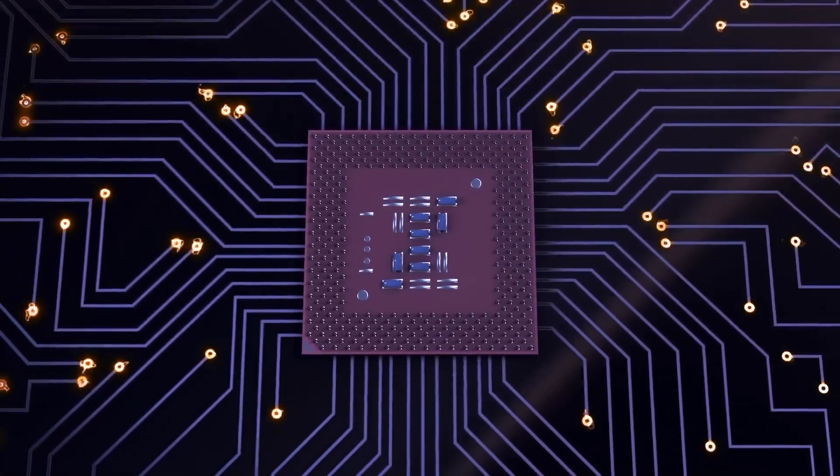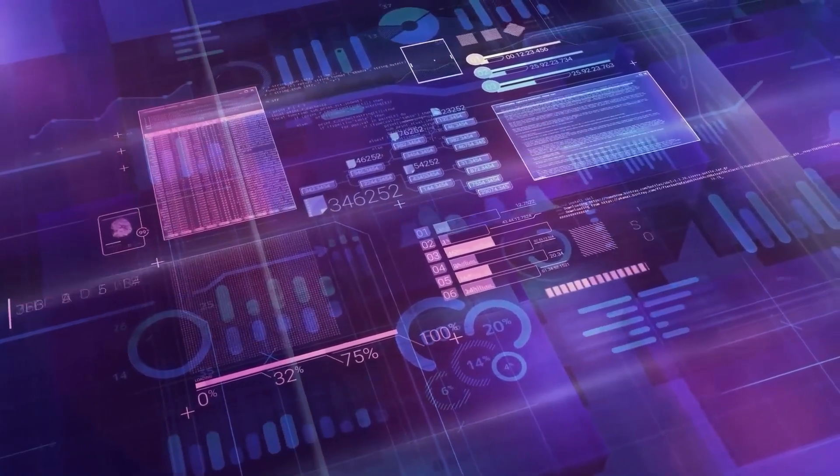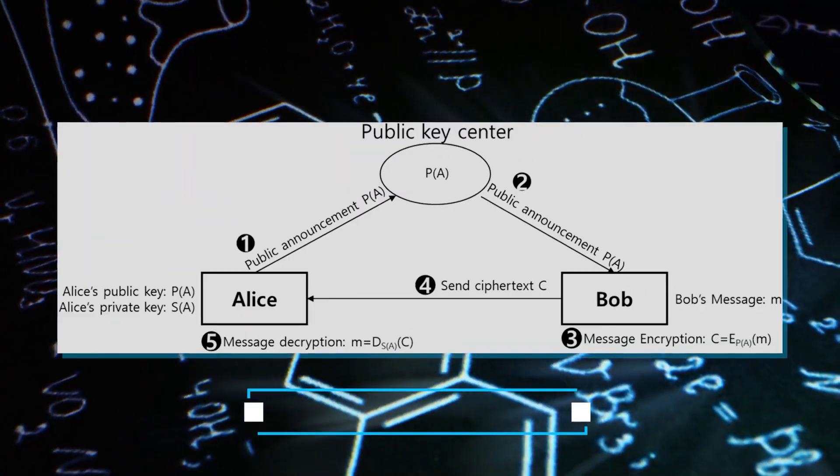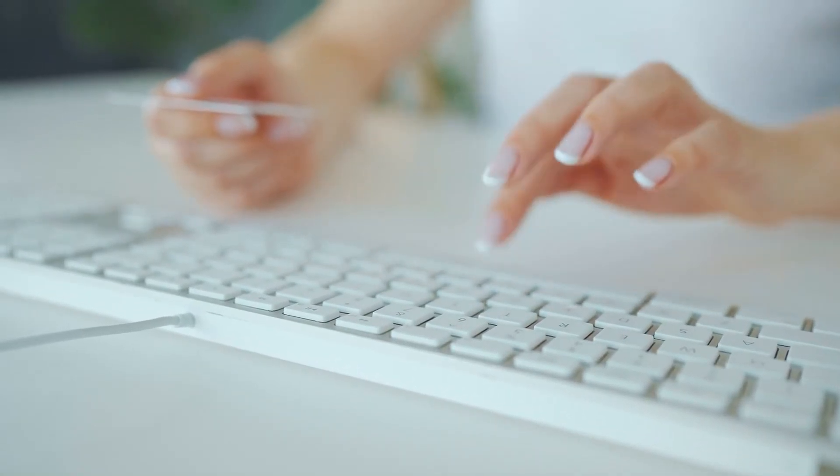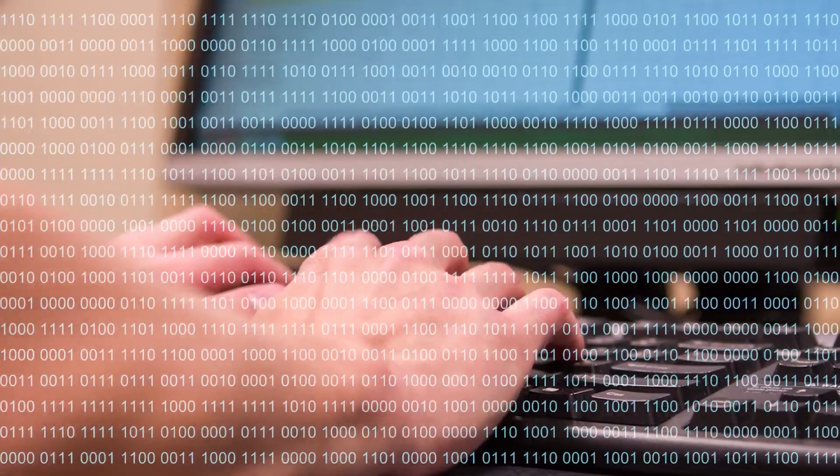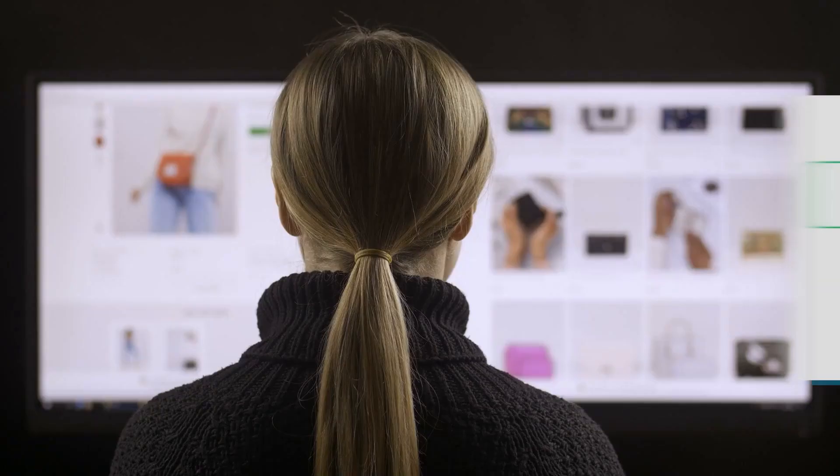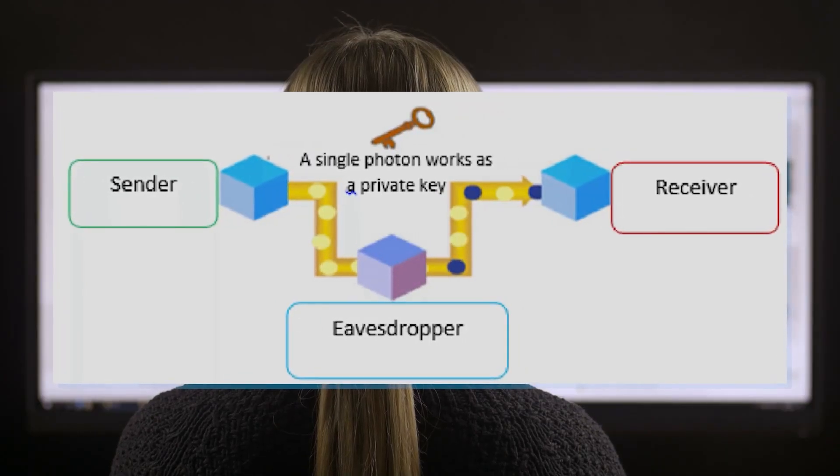This is where RSA encryption comes in. The information you send is scrambled using a highly complex math formula called the public key. The result is a mix of numbers and letters that are incomprehensible to anyone intercepting the data. Only the online store can decrypt it using a different but related formula known as the private key.